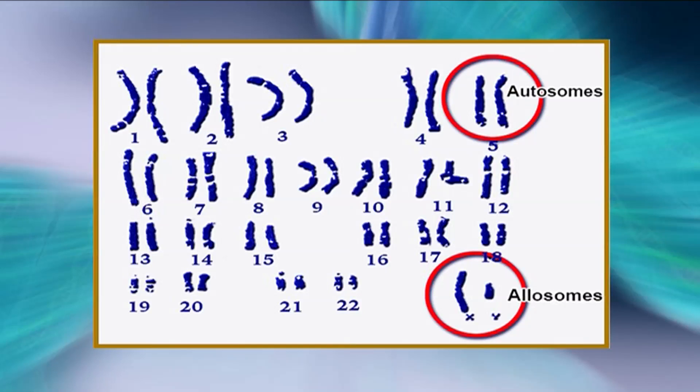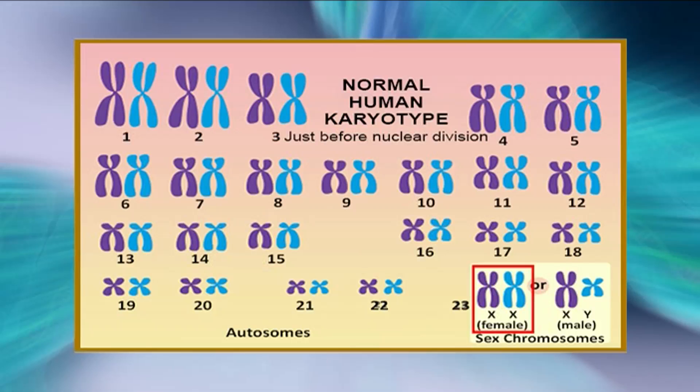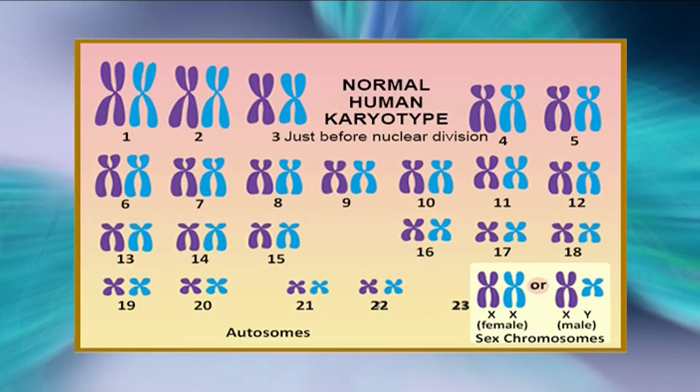We can see the 22 pairs of autosomes and one pair of allosomes. When we compare the karyotype of both male and female, we conclude that males and females both have the same number of autosomal chromosomes, except the allosomes which are different in men and women. Females have two X chromosomes and males have X and Y. Since X and Y are different chromosomes, they would have different genes.